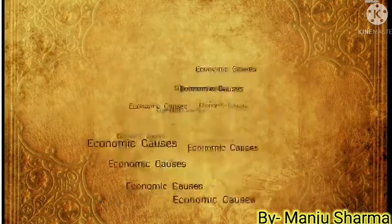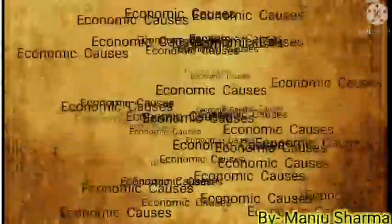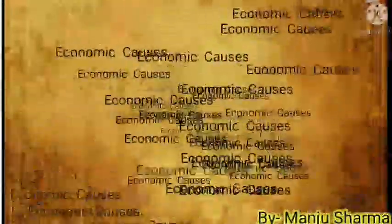First, economic causes. The most important cause of discontentment against the British was the policy of economic exploitation. The peasants suffered due to high revenue demands made by the company. The artisans had lost their means of livelihood. People working as administrative staff and workers for kings and nobles lost their livelihood due to the displacement of the ruling classes. The company officials started draining away Indians' wealth to England.